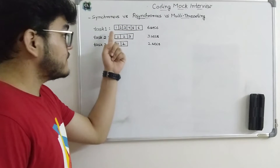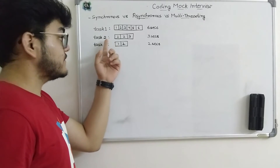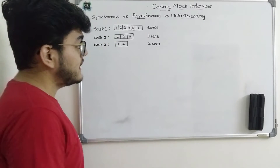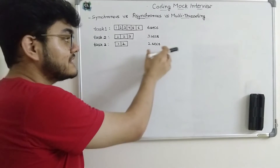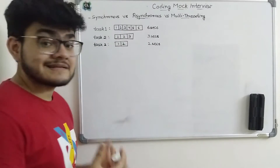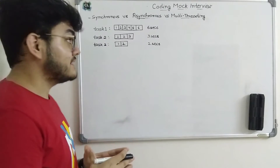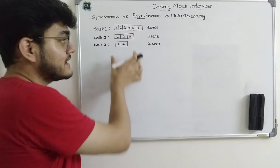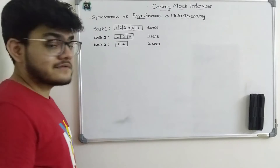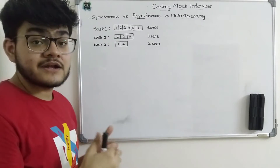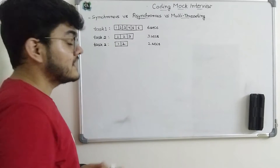First, we are going to assume that we have three tasks. This is task 1, task 2, and task 3. I have written the time these tasks will take to complete. Task 1 will take 6 seconds to complete, task 2 will take 3 seconds, and task 3 is going to take 2 seconds. I have divided each task into respective time slots.